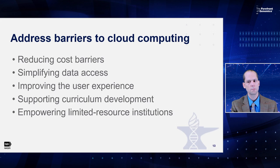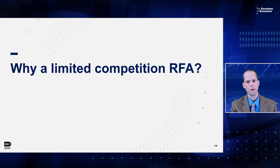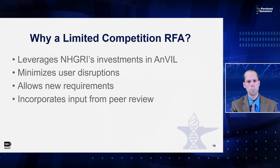The ANVIL is working to address all of these barriers already, but we think that by further focusing on these in the next phase, we can make the platform even more successful. We talked about where ANVIL has been and where we want to see it go — but why do we think the limited competition RFA is the way to get there? Continuing to support the ANVIL through the Broad and Hopkins allows NHGRI to continue leveraging our investments in those current teams, platforms, tools, services, documentation, and processes. It's taken four years of hard work to get us to where we are today.